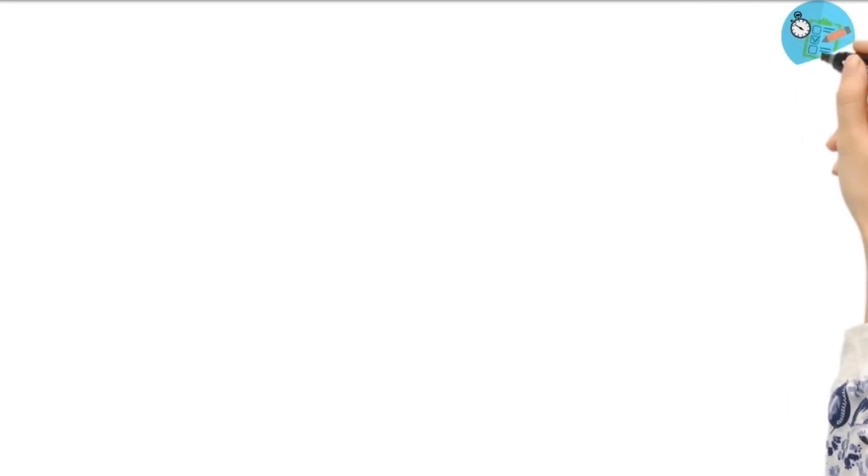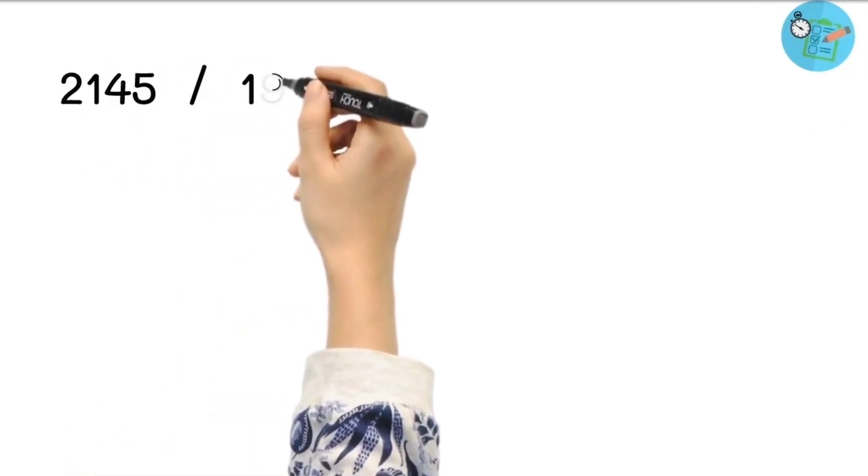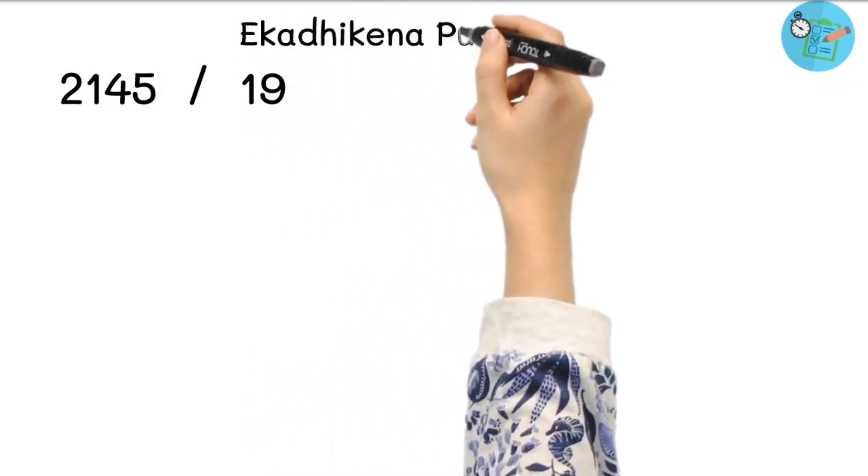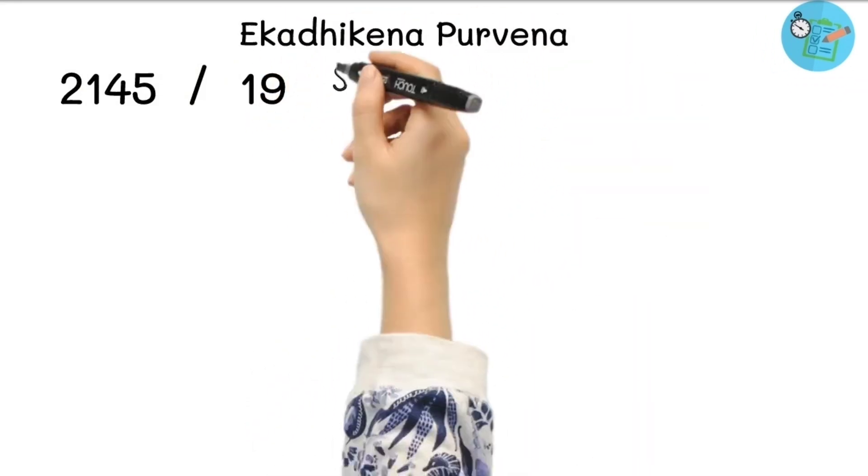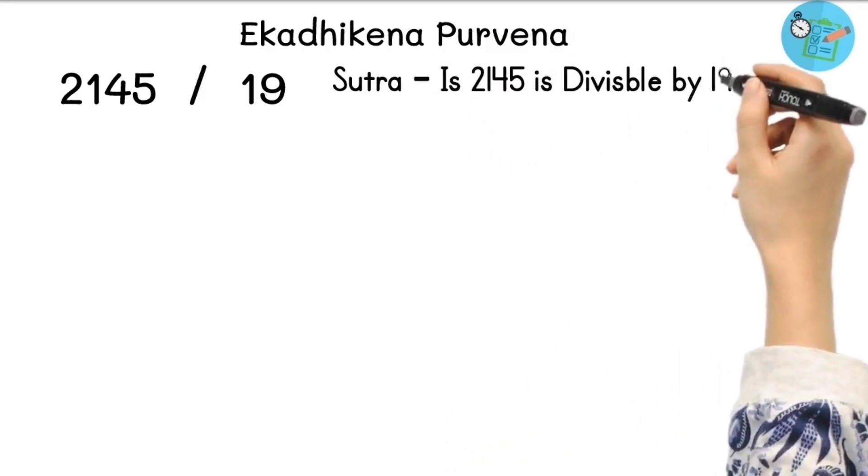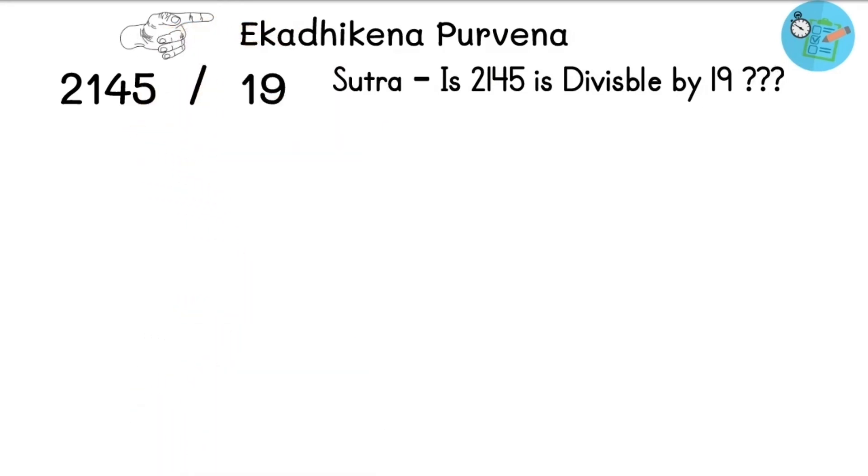Let us take example on it. Example is 2145 divided by 19. According to the Vedic math sutra, we need to check that 2145 is divisible by 19 or not. For that, according to the sutra, we need to consider tens digit of 19 which is 1 and take the next number of it which is 2.